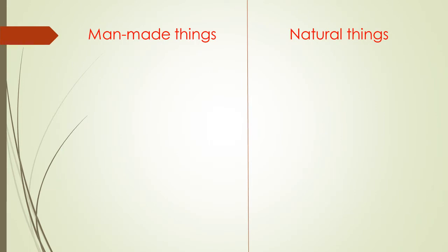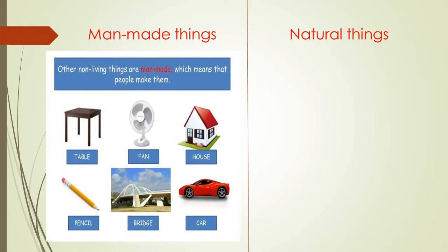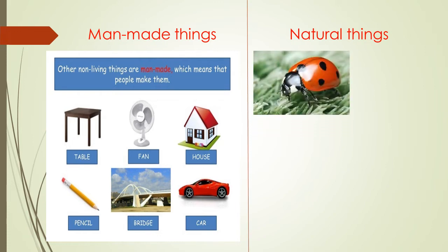In the previous class, you already know which are man-made things and which are natural things. Natural things are sun, plants, animals, water, clouds, etc.